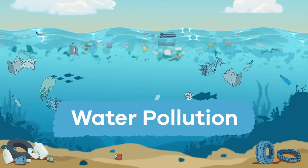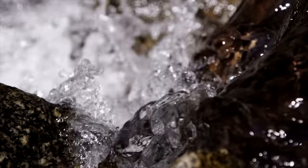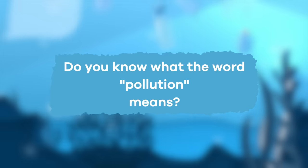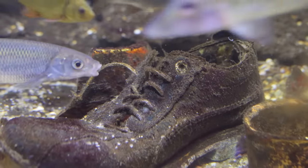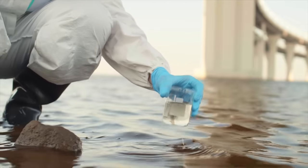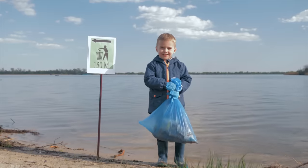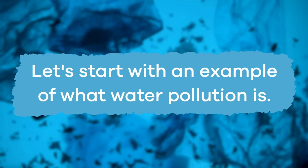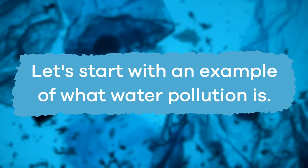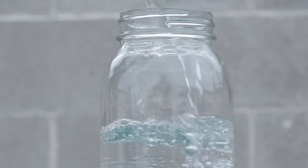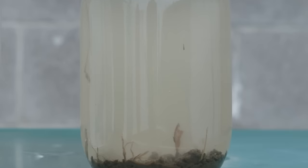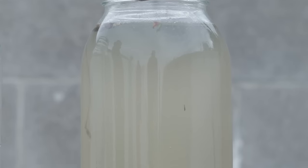Water pollution for kids! Have you ever thought about the water you drink and whether or not it's clean? Do you know what the word pollution means or how it happens? Today we are going to talk all about water pollution, where it comes from, and how you can help prevent it. Let's start with an example: imagine you're really thirsty and someone hands you two jars of water. In the first jar, you have water poured straight out of a sealed water bottle. In the second jar, you have water collected from the rain gutter outside.